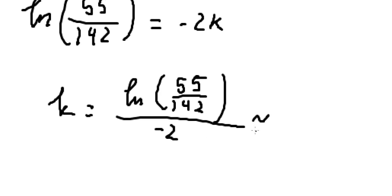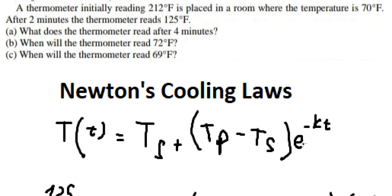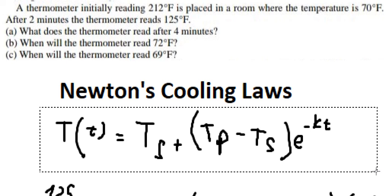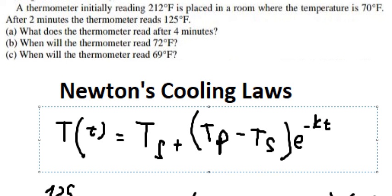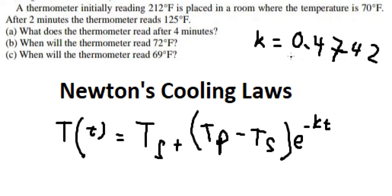And this is approximate about 0.44742. After we got the value, we can apply this one into this equation. After we got K equal to 0.4742, we can answer question A.